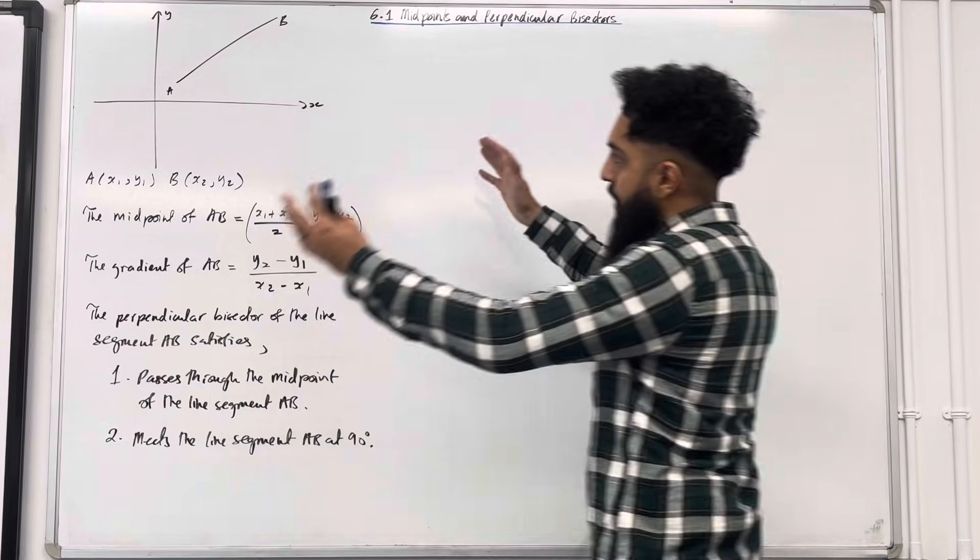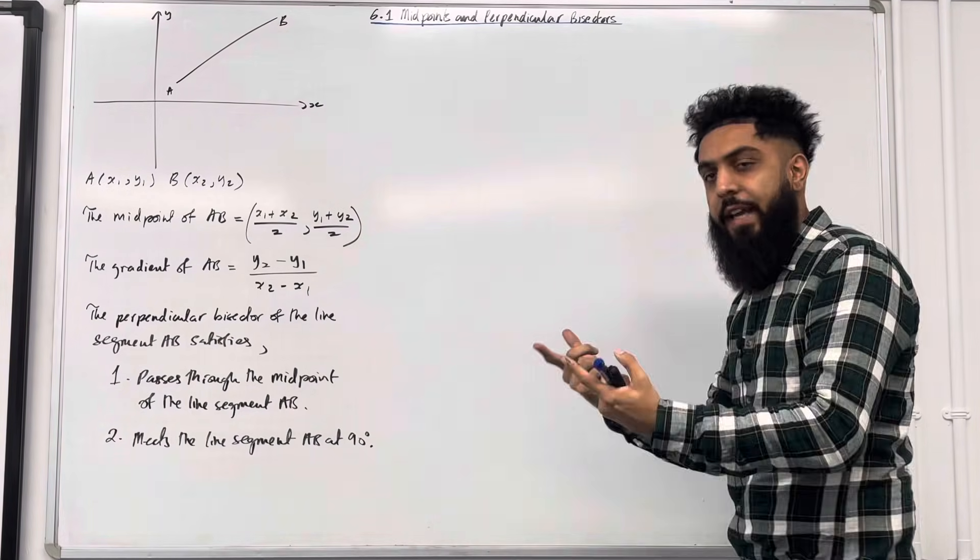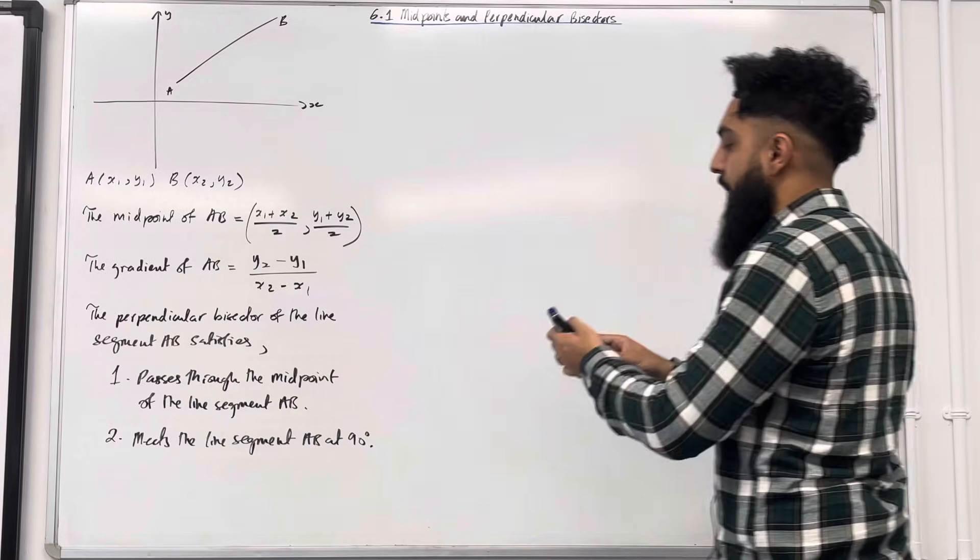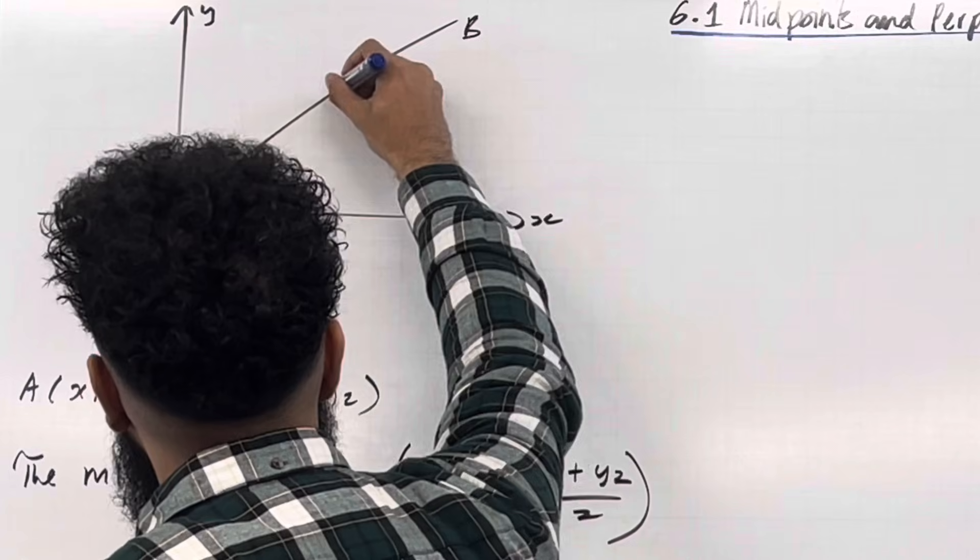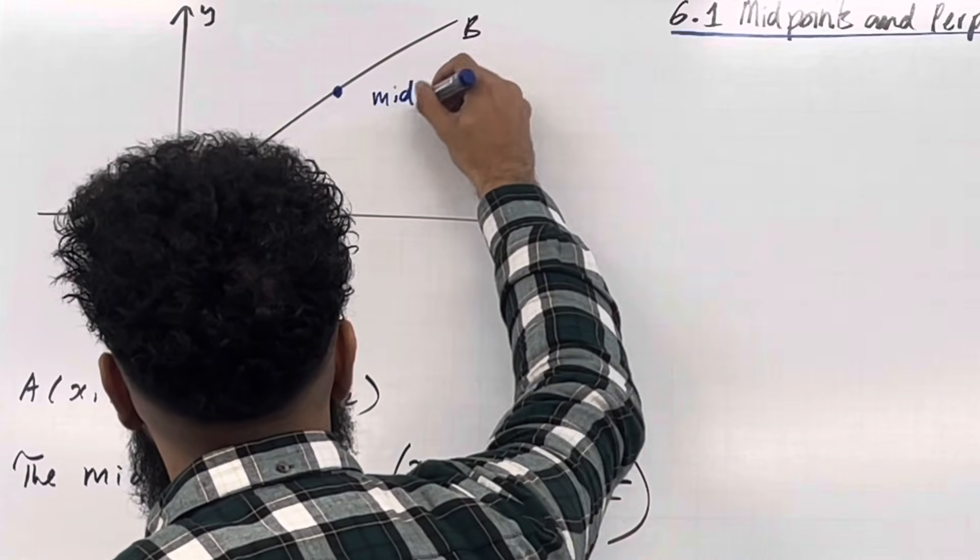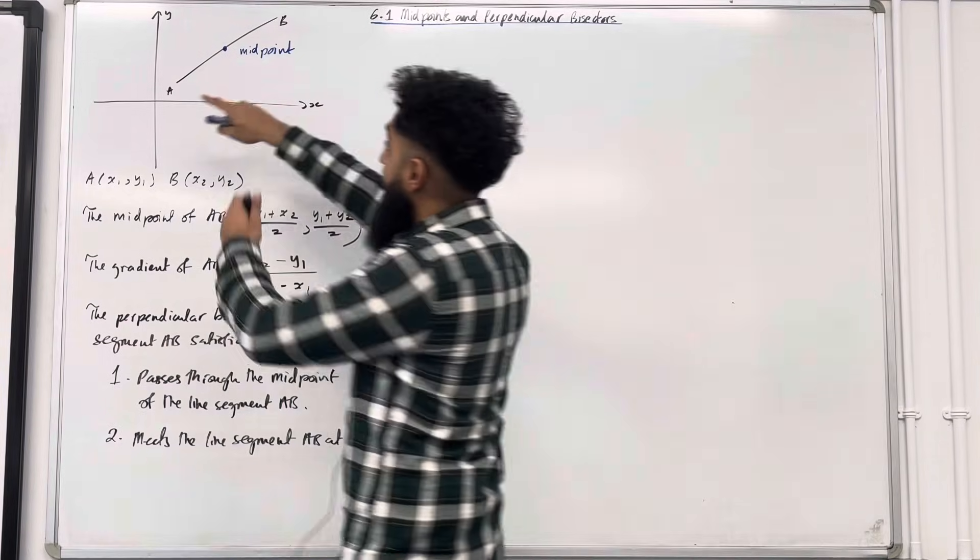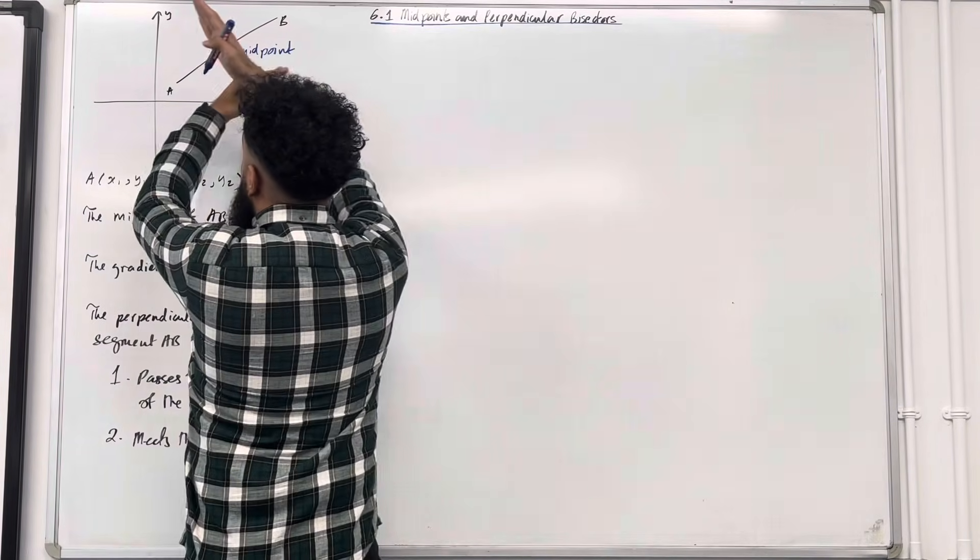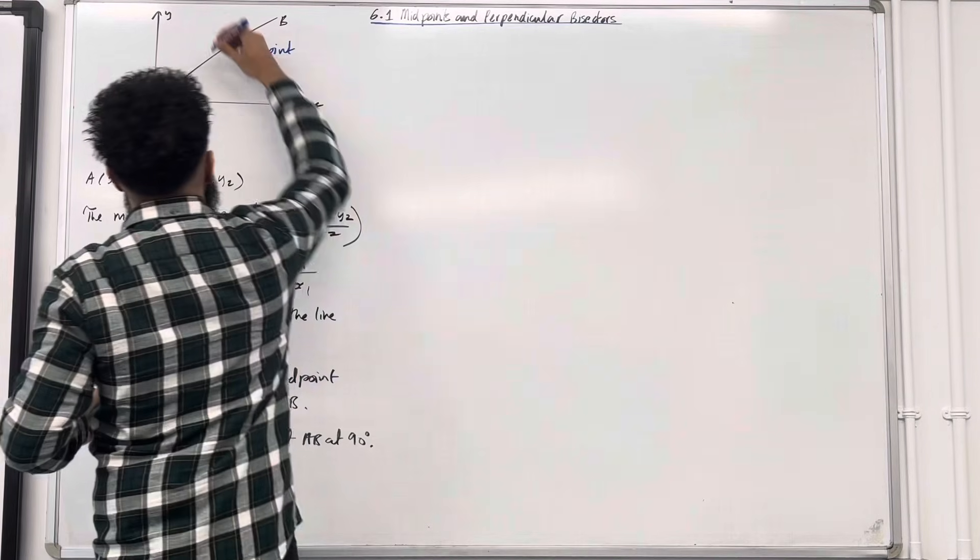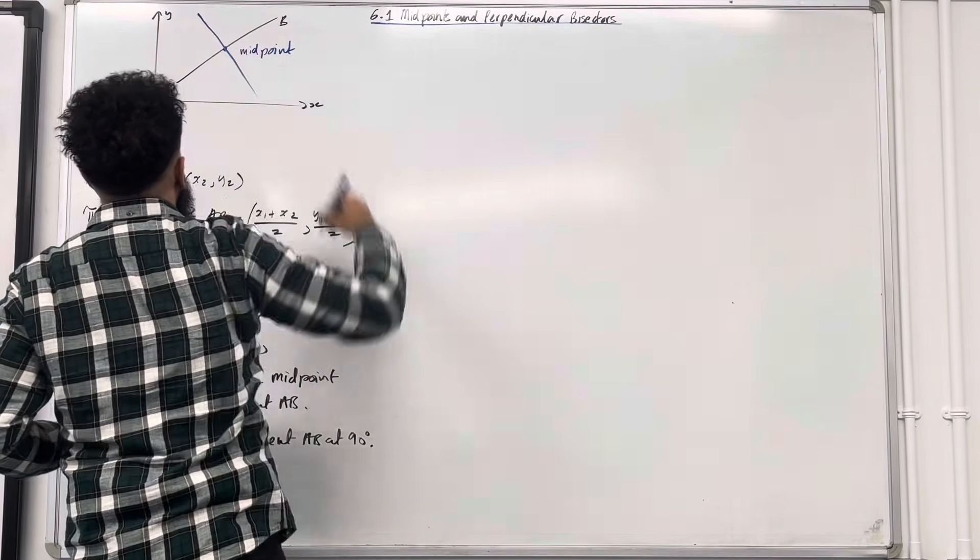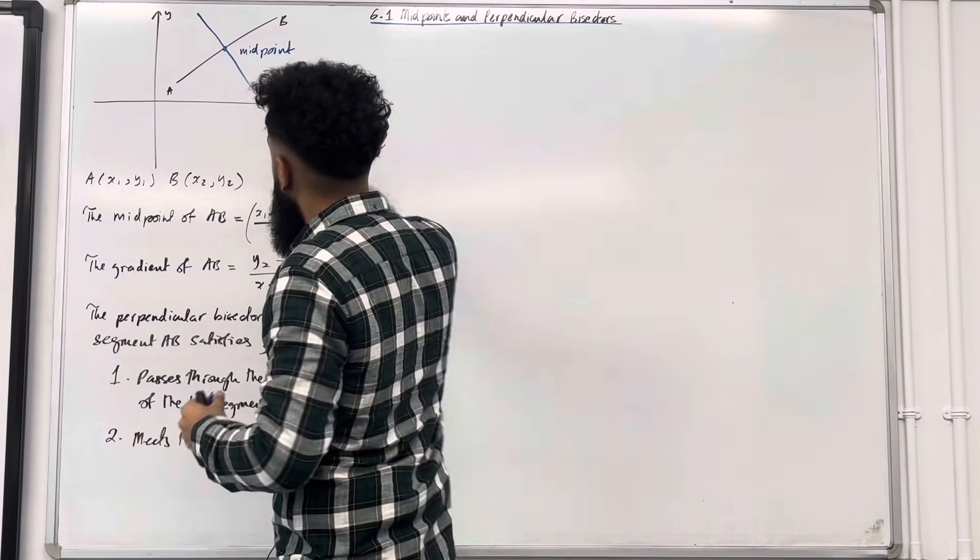On my coordinate grid, I've got the line segment A to B. I am now going to label the perpendicular bisector to the line segment A to B. We know that the perpendicular bisector passes through the midpoint. And we also know that the perpendicular bisector meets the line segment A to B at 90 degrees. This is what my perpendicular bisector looks like. I can call this line L.